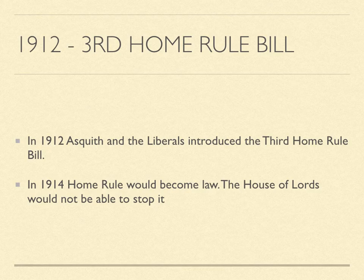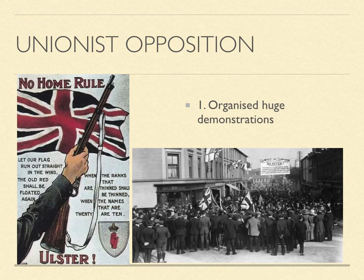Home Rule meant that Ireland would get to handle its own internal affairs while Britain was still in charge of external affairs. There was immediate opposition from the Unionists, mainly centred in the northeast of the country, led by the two men we met before: Edward Carson and James Craig.